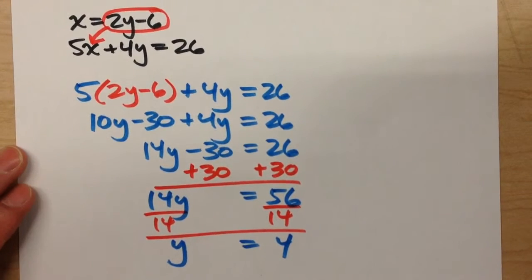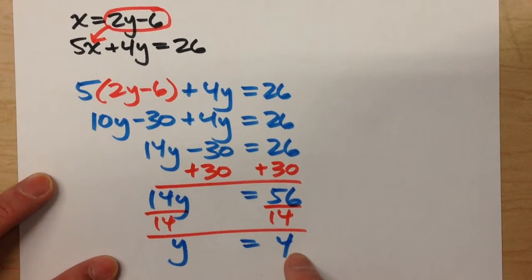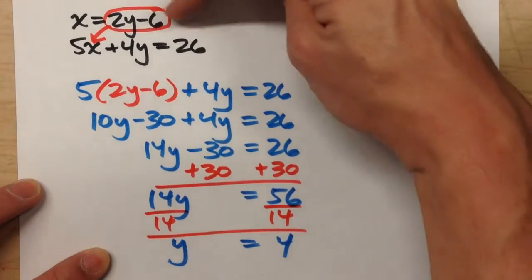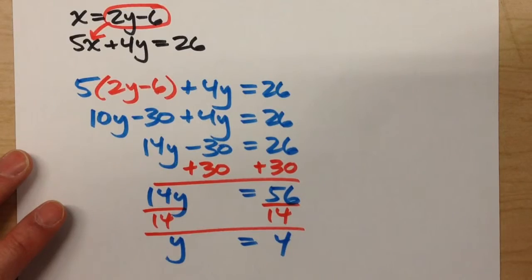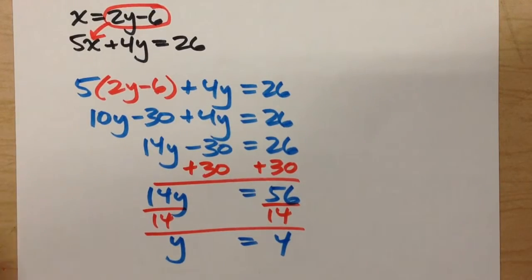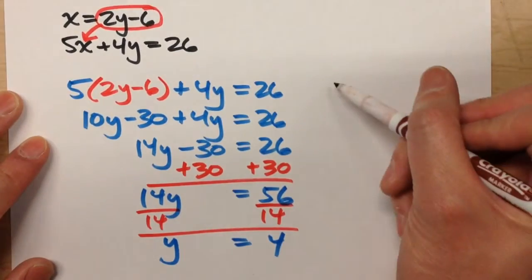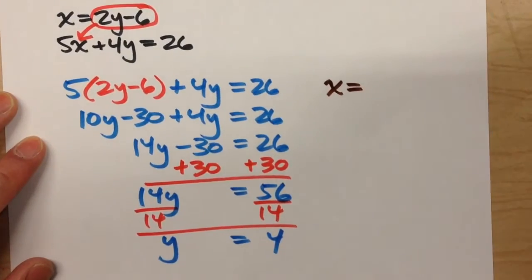So I'm halfway there, I've got y, now I need to go back and find x. Notice my first equation is an x equals equation, so that is going to be the easier one to use. If I want the value of x, I'll use the x equals equation.